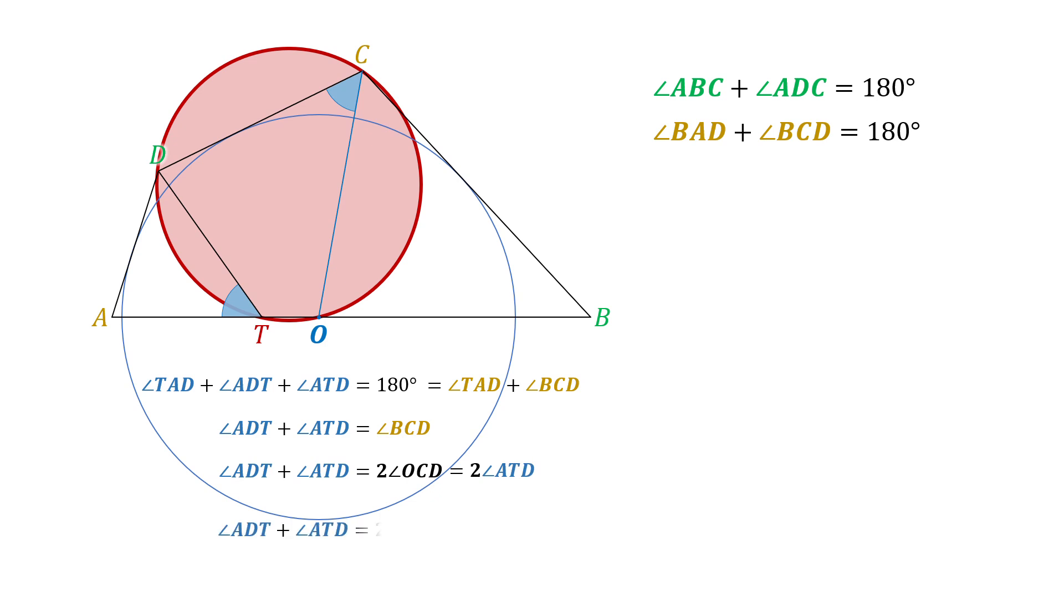From this equation, we deduce that angle ATD equals angle ADT. Thus, triangle ADT is isosceles, and AD equals AT.